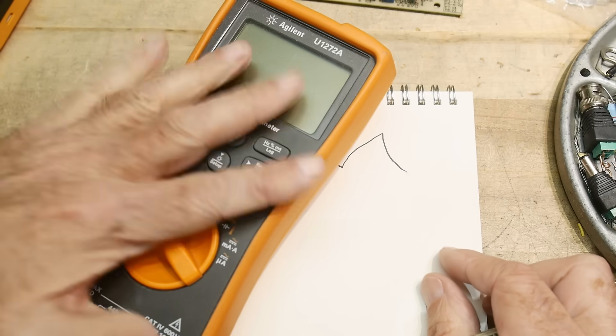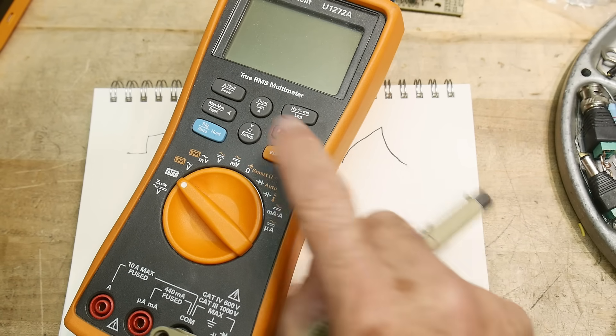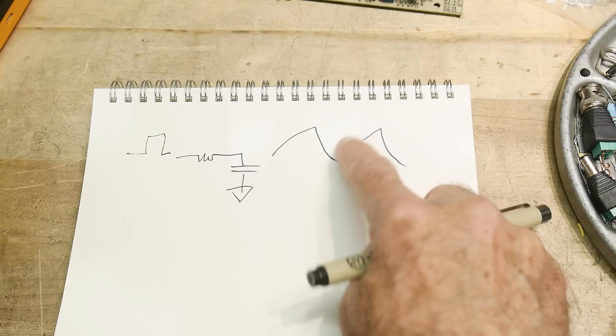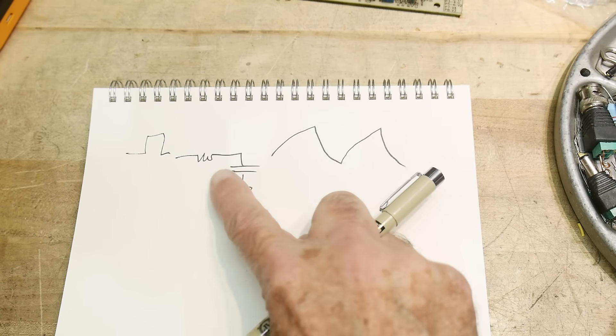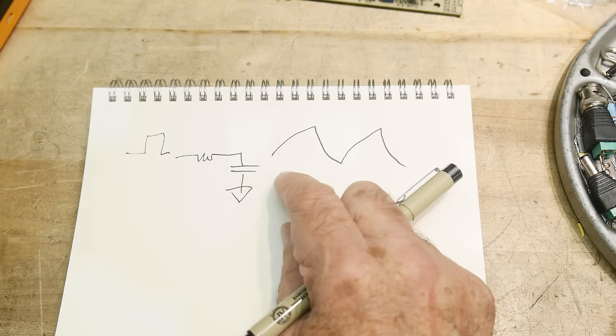Your DVM, if it has a capacitor setting, that's what it's doing inside. It's just ramping up and ramping down. So it can test capacitance, but it can't test resistance. It can't test this thing called ESR.